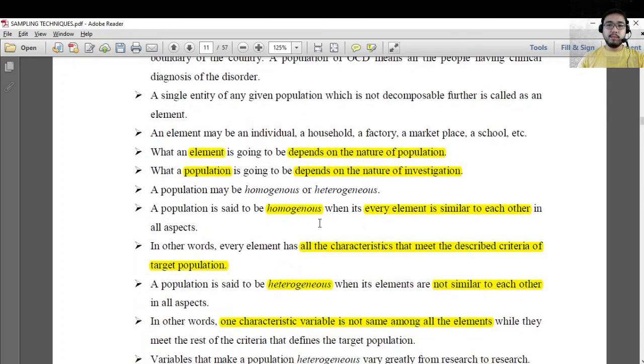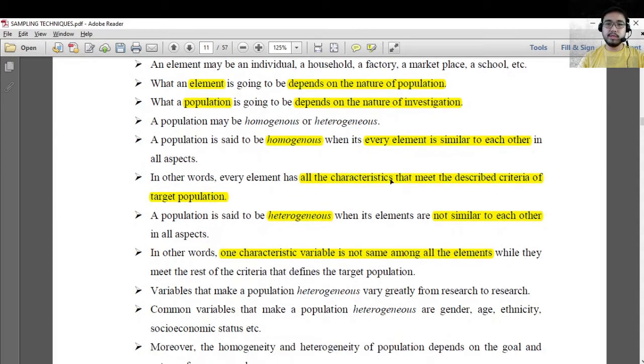Population could be homogeneous, or it could also be heterogeneous. It becomes homogeneous if all the elements are similar to each other, and it becomes hetero if there's a specific element that's not similar to all other elements. For example, it is homogeneous if all the characteristics described in the criteria are met, while it is hetero if one characteristic variable is not the same among all others.